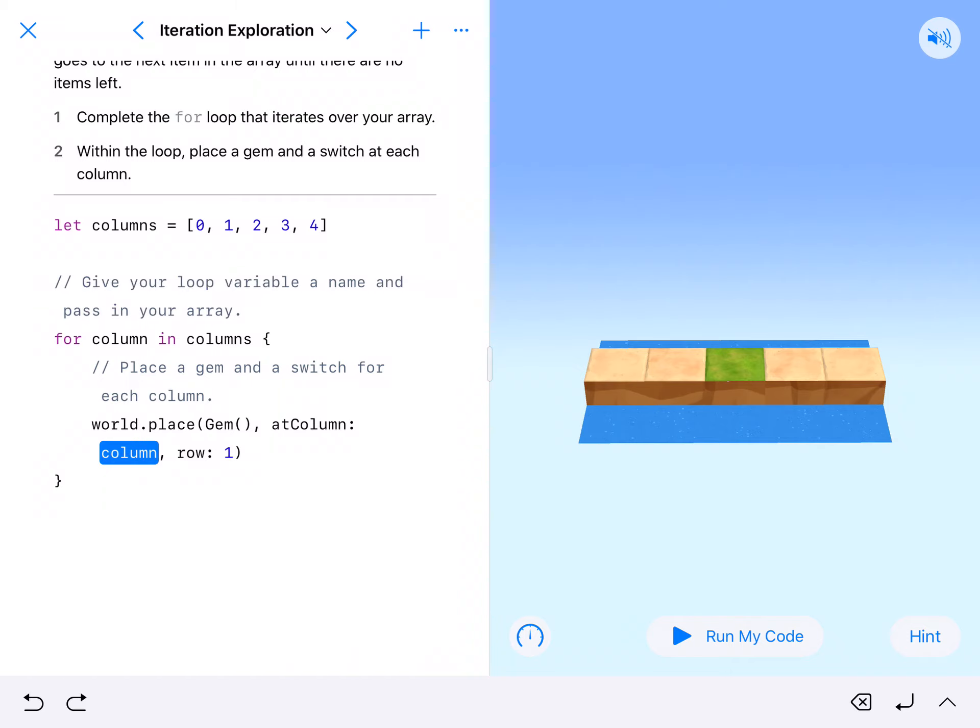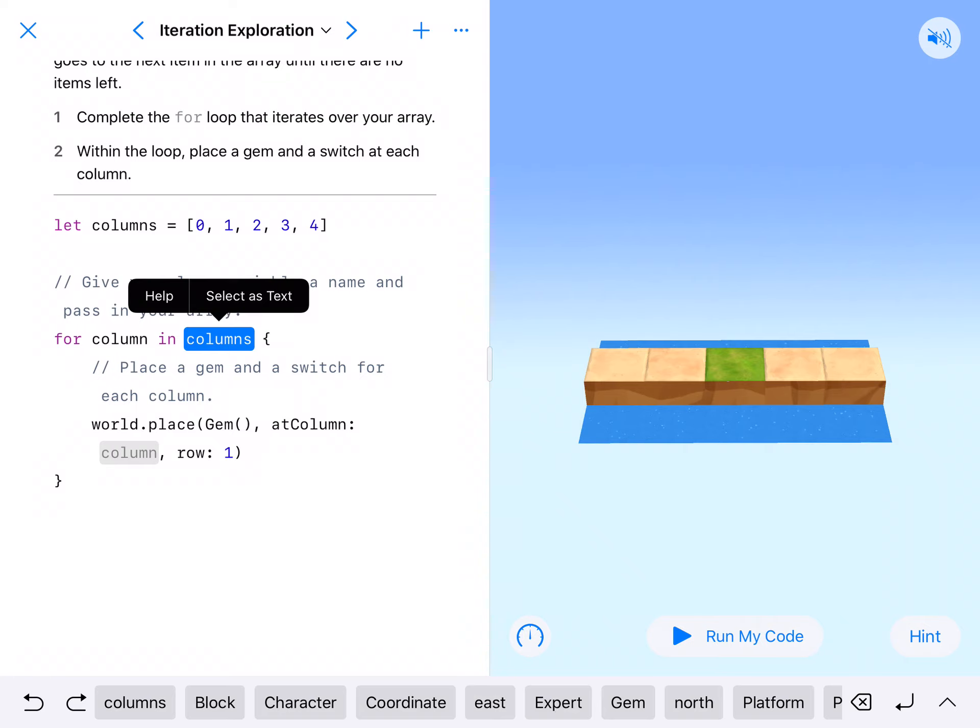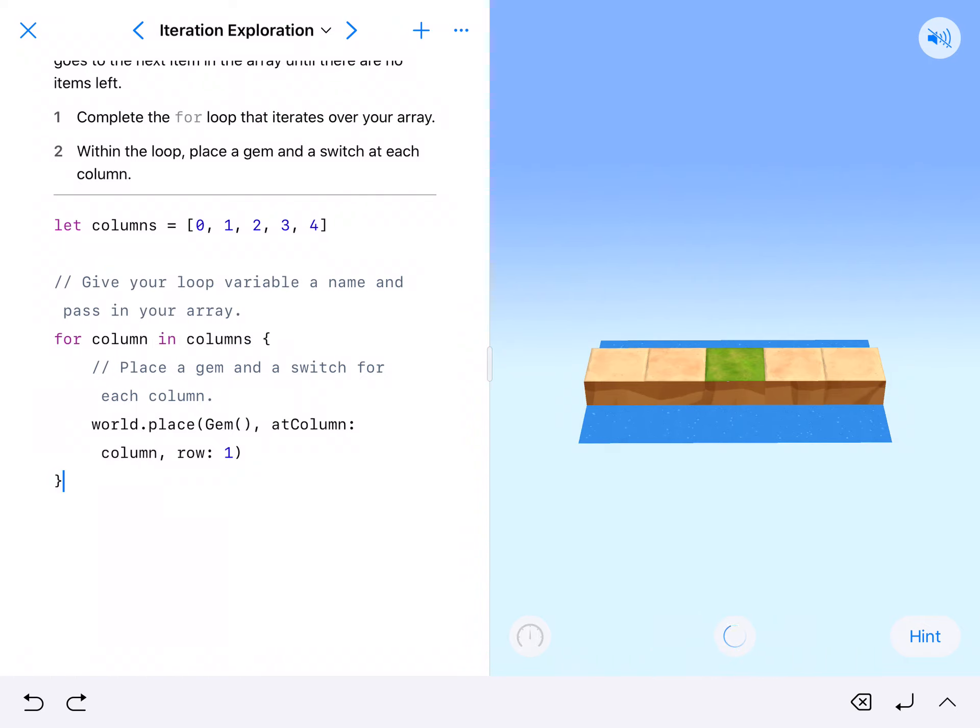we reference it, and then it references our array. So we want column here. If we go ahead and place that, we will then get gems at all of our spaces.